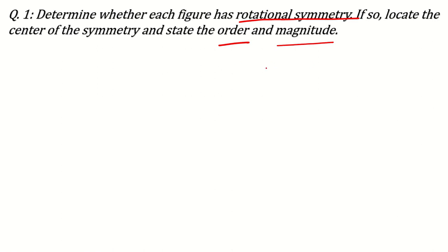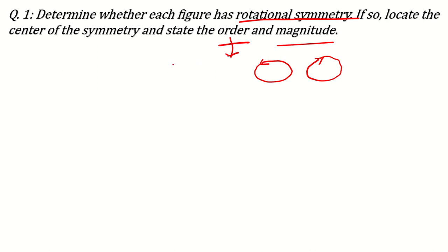Before starting the question, let's understand what rotational symmetry means. Rotation means moving in the direction of a circle — it could be clockwise or counterclockwise, it doesn't make a difference. Rotational symmetry means that by moving in a circle we return to the previous position, so the picture maps onto itself and they overlap. The order is how many times they overlap from 0° to 360°.